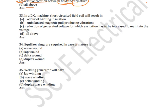Next question: in a DC machine, short-circuited field coils will result in which of the following? Options are: odour of burning insulation, unbalanced magnetic pull producing vibrations, reduction of generator voltage for which excitation has to be increased to maintain voltage, or all of these. Which is the correct answer?